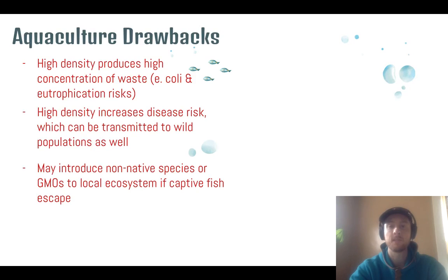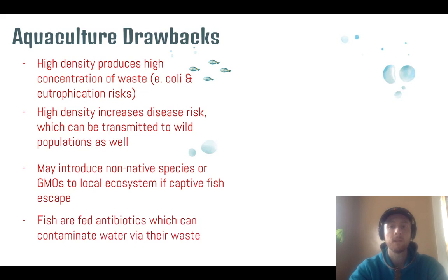Another problem is that the fish or species being grown in aquaculture may not be native, and they may be genetically modified. So if they escape from their enclosure, they may breed with wild populations or become an invasive species. Finally, we're going to have to use antibiotics because the fish are in such dense populations, which increases the risk that those antibiotics contaminate the water — they can pass through the fish's bodies and leave as waste, causing endocrine disruption.